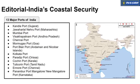The major ports include those in Gujarat, Mumbai and JNPT in Maharashtra, Mormugao port in Goa, Mangalore port in Karnataka, Kochi in Kerala, Tuticorin and Chennai in Tamil Nadu, and Haldia port in West Bengal. This is how we have 13 major ports.